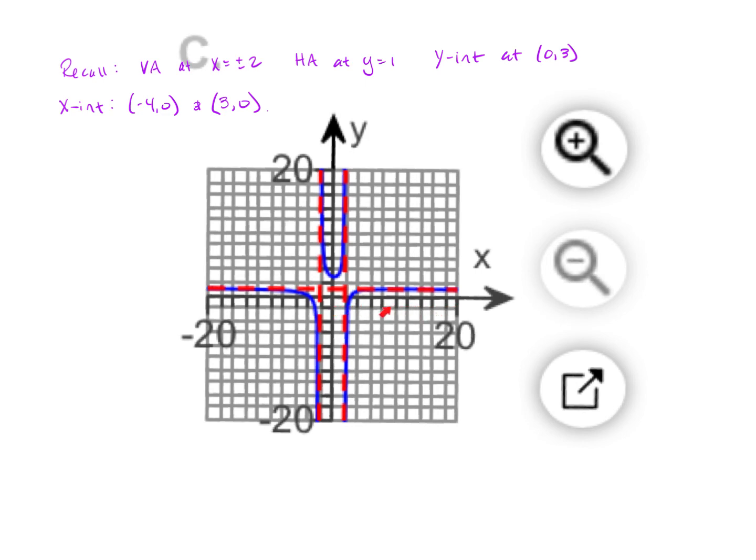The scale is by 2, so these vertical dashed red lines are 1 tick mark from the origin, which means they're actually at 2. So these vertical asymptotes are in the correct place.